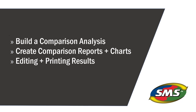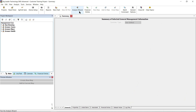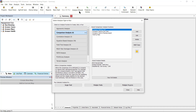Some common comparisons include yield by hybrid, yield by soil type, yield by implement, yield by management zone, and so much more. To begin, go to the Analysis Wizard in the main toolbar and select Comparison Analysis on the left.